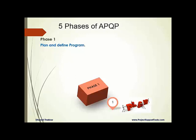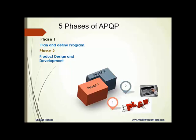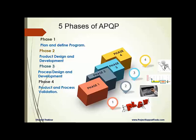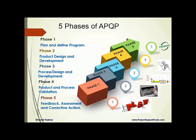So there are five phases of APQP. Phase one is plan and define — you define and plan what you need to do. Phase two is product design and development — you develop the product design. Phase three is process design and development — once your product is ready, you go into process development. Phase four is product and process validation, where you validate your product and process. Phase five is feedback, assessment, and corrective actions — you check feedback, perform corrective actions, and prepare for mass production. These are the five broader phases of APQP.